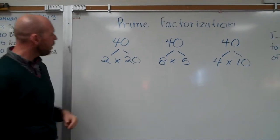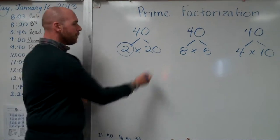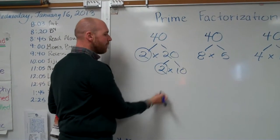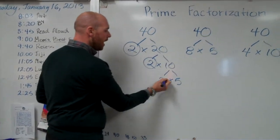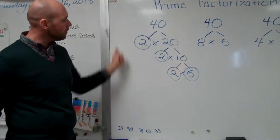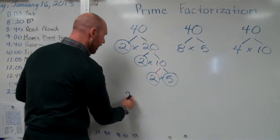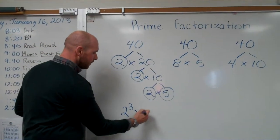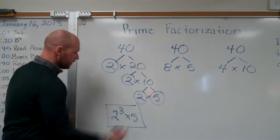Alright. So let's go over here to the 2 times 20 path. Well 2 is already prime. Now I'm going to take apart 20, 2 times 10. I got another prime factor there. And then to make 10 is 2 times 5. I got two more prime factors. So I'm going to put them together. I've got 2 times 2 times 2 which is the same as 2 to the third power or 2 cubed times 5. Alright. Beautiful. Gorgeous. Love it.